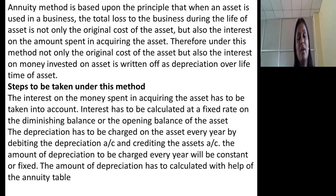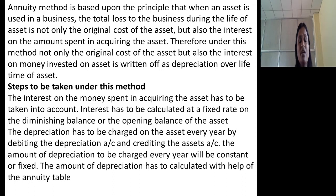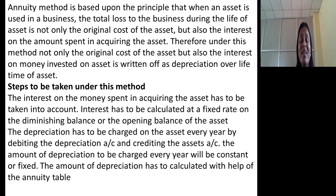The important steps to follow under this method: First, the interest on money spent in acquiring the asset has to be taken into account. Interest has to be calculated at a fixed rate on the diminishing balance, or the opening balance of the asset. The depreciation has to be charged on the asset every year by debiting the depreciation account and crediting the asset account. The amount of depreciation to be charged every year will be constant or fixed, and it should be calculated with the help of the annuity table. You will come to know how to calculate depreciation with the help of the annuity table once I start solving the problem.